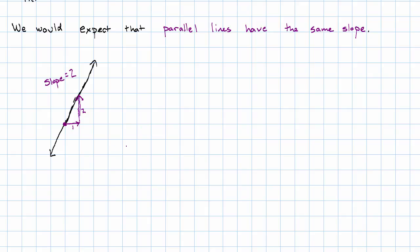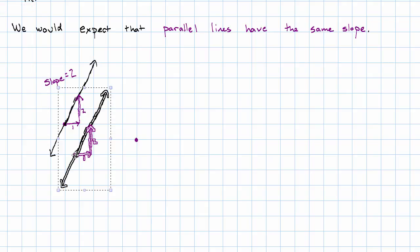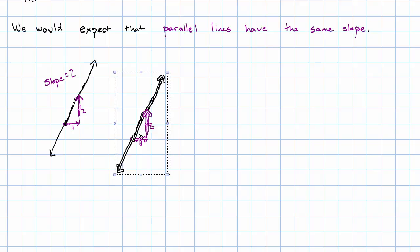Remember that we said that one way we can get a parallel line is by translating our given line. I'm going to make a copy of this line and translate it to go through the point that I marked.